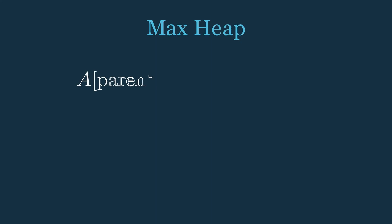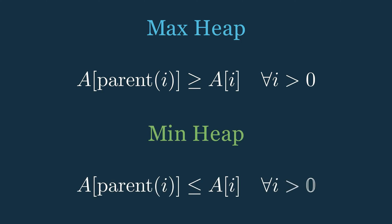Now, heaps have a key property. In a max heap, each parent node is greater than or equal to its child nodes. Conversely, in a min heap, each parent node is less than or equal to its child nodes.